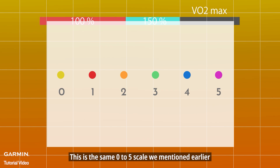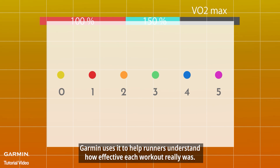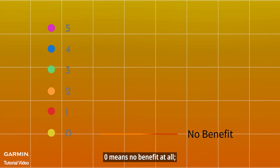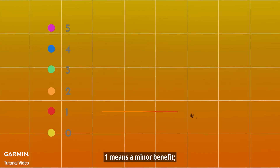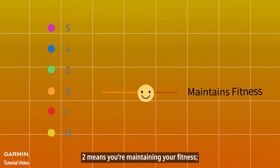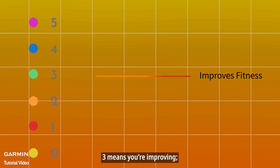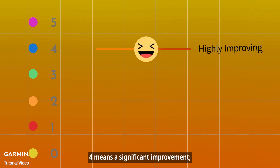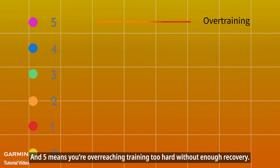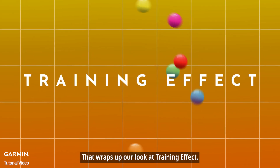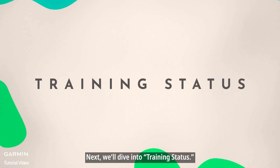This is the same 0–5 scale Garmin uses to help runners understand how effective each workout really was. 0 means no benefit at all. 1 means a minor benefit. 2 means you're maintaining your fitness. 3 means you're improving. 4 means a significant improvement. And 5 means you're overreaching — training too hard without enough recovery. That wraps up our look at training effect. Next, we'll dive into training status.